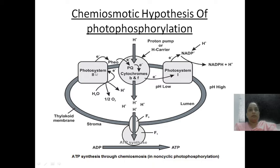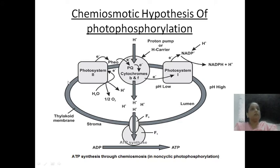You have studied about photosystem 1 and photosystem 2 — these two photosystems — and the transport of electrons via the Z scheme. This ring-like structure you can see is a thylakoid. The outer membrane and the inner membrane of the thylakoid are visible here, and the process we are discussing is occurring in the membrane of the thylakoid.